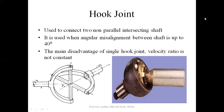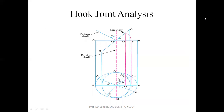Here are pictures of the single hook joint, which is used in a propeller shaft. In the hook joint analysis, this is the top hook and this is the front hook. Fork AB is attached to the driving shaft and fork CD is attached to the driven shaft. Alpha is the shaft angle.